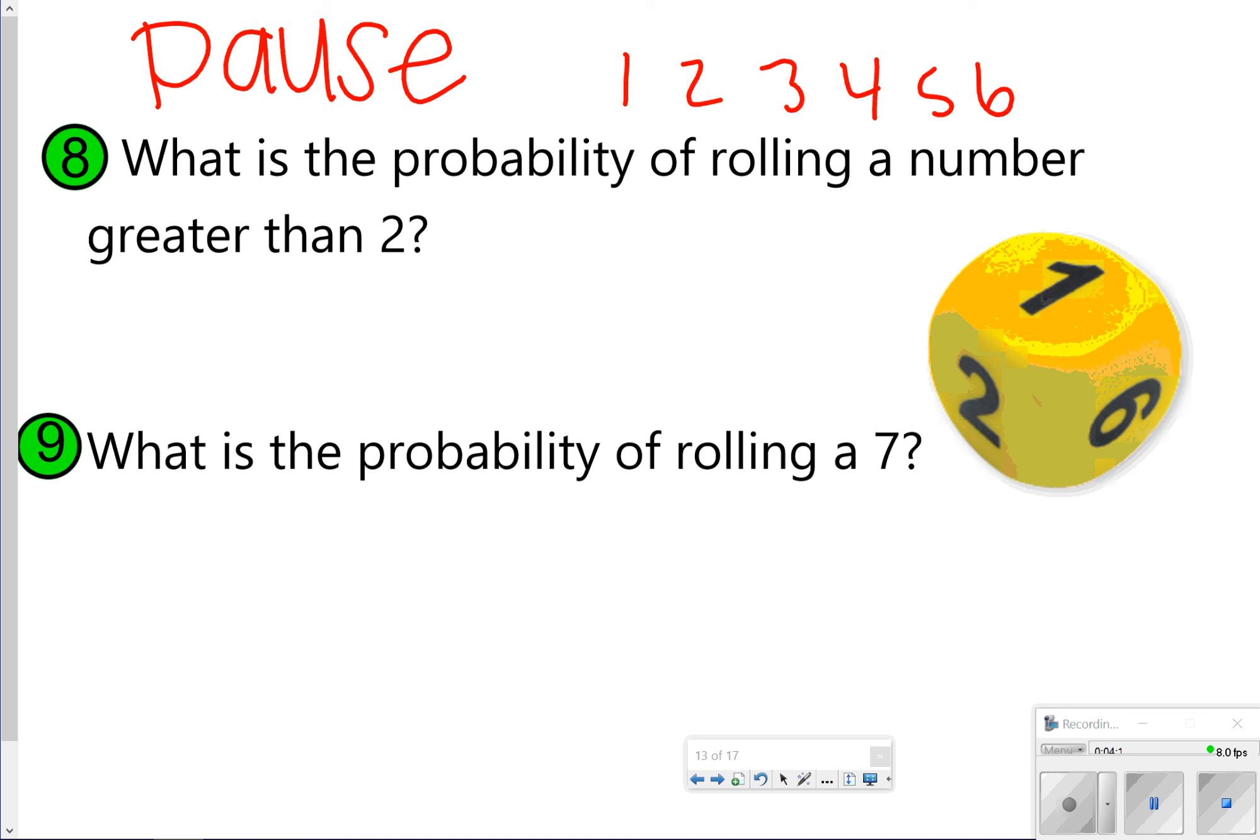Again, on a number cube, we have the numbers 1 through 6. The numbers that are greater than 2 are going to be 3, 4, 5, and 6. That's four options out of 6, which is approximately simplified, 2 thirds. You could write this as a repeating decimal, 0.66 repeating, or 66.6 repeating percent. Any one of these would work as your answer.